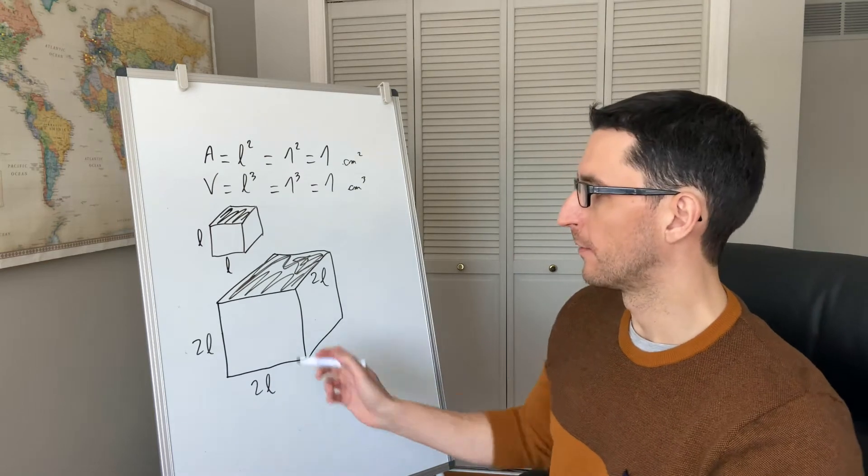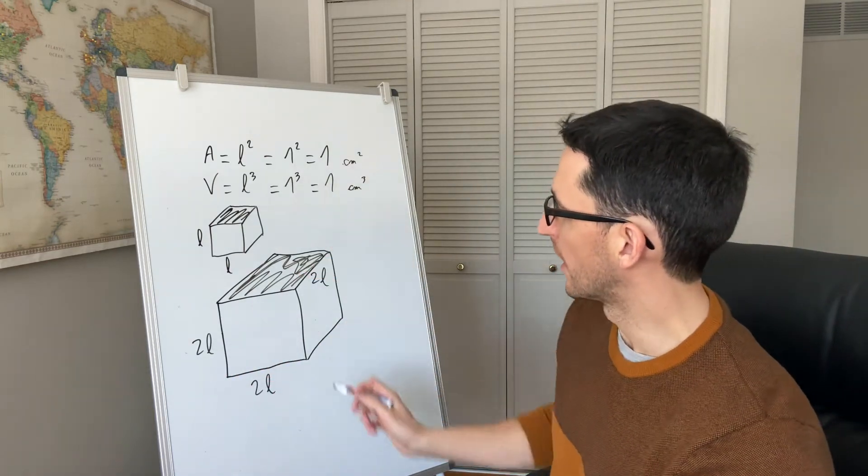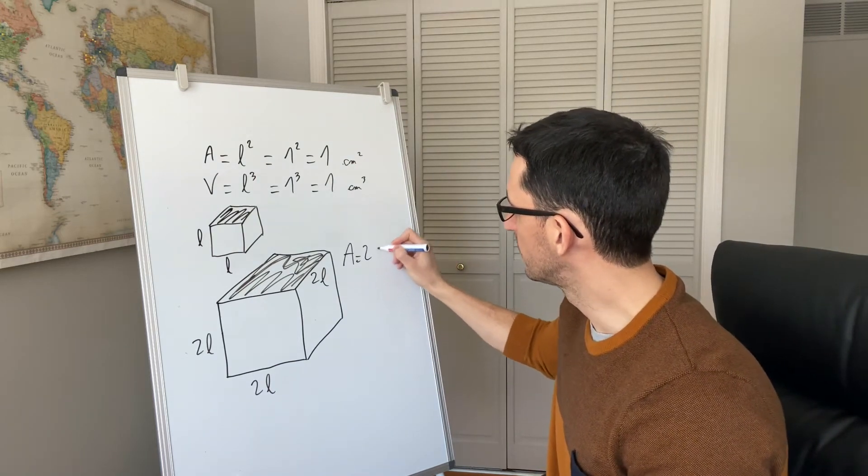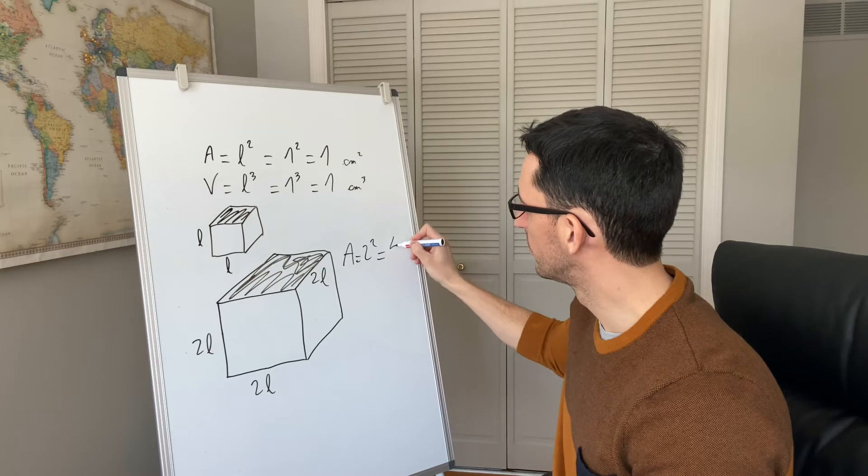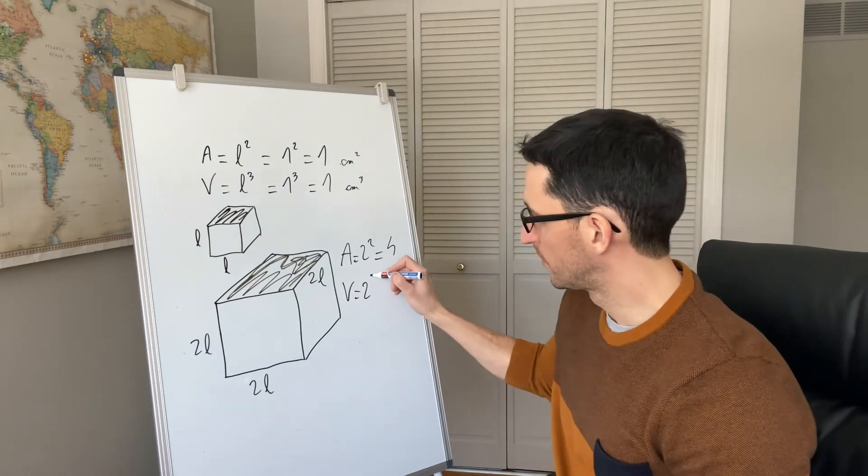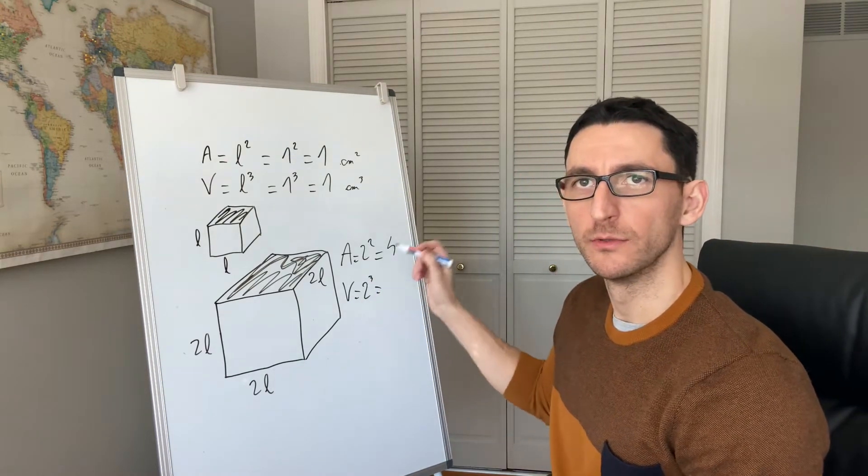So for a cube of length 2 instead of 1, the cross-sectional area will be equal to 2 to the power of 2, which is equal to 4. And the volume will be equal to 2 to the power of 3, which is 8.